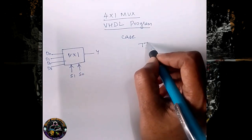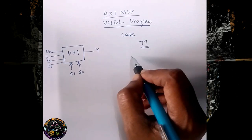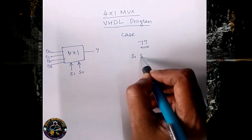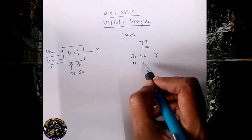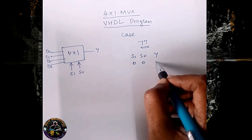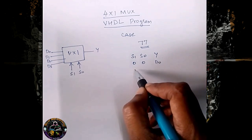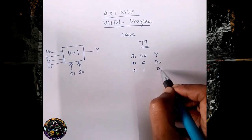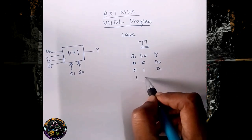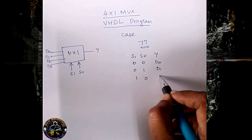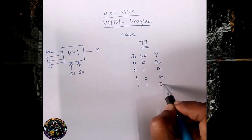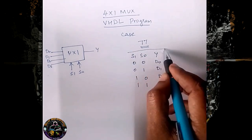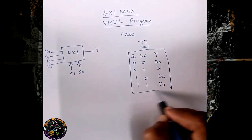The truth table for this 4-to-1 mux has selection lines S1 and S0, and the output Y. If selection line is 00, then output is D0. If selection line is 01, then D1 is routed. If selection line is 10, then D2 is routed. If selection line is 11, then D3 is routed. This is the function of the 4-to-1 mux.